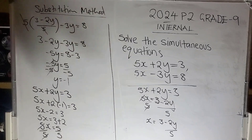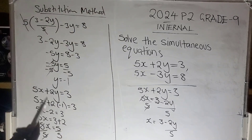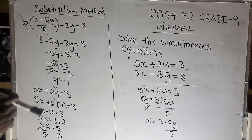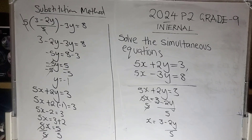Therefore x is positive 1 and y is negative 1 — the same result as the elimination method. If you choose the second equation, you will still find the same answer. Thank you so much, see you in the next question.